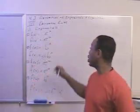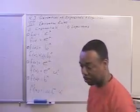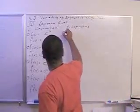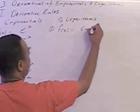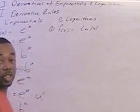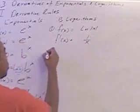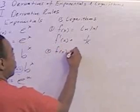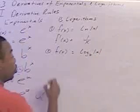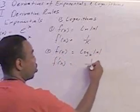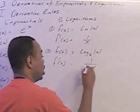Now let's look at the rules for the logarithms. Let's say f of x equals natural log of the absolute value of x — using the absolute value so we can use both sides. The derivative of this is 1 over x. If your logarithm is using a general base and not e, log base b of the absolute value of x, then the derivative will be 1 over x, and the x in the denominator gets multiplied by the coefficient natural log of b.